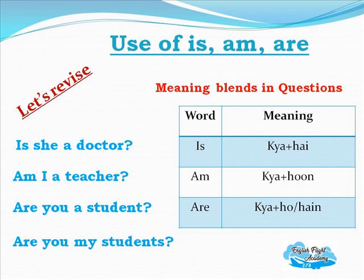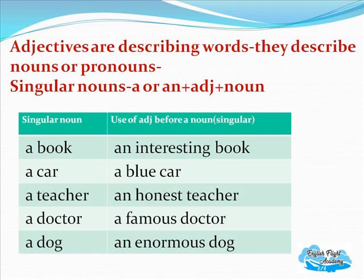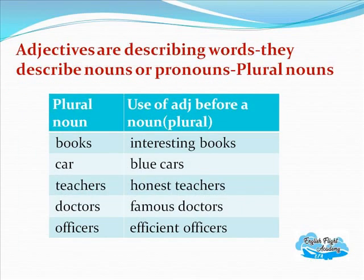I hope it's very clear. A car, a blue car, a teacher, an honest teacher, a doctor, a famous doctor, a dog, an enormous dog. With adjectives, the same article rule applies. When we use plural nouns with adjectives, we do not use 'a' or 'an' — for example: interesting books, blue cars, honest teachers, famous doctors, efficient officers.